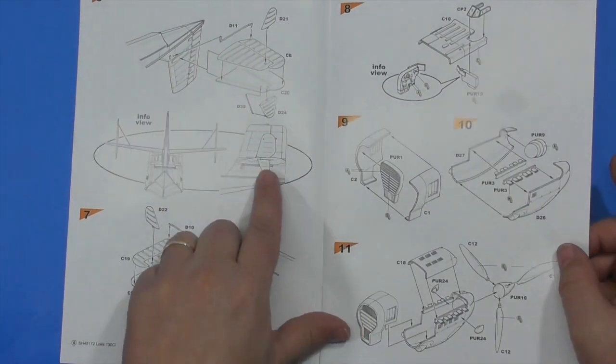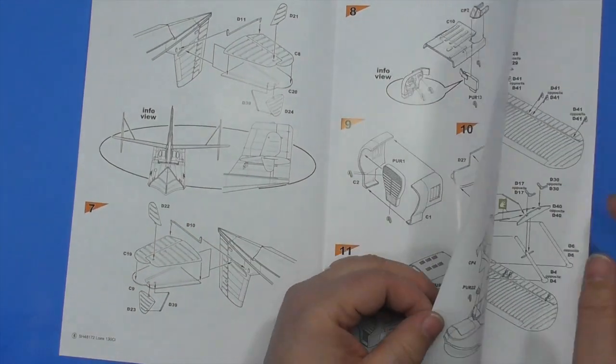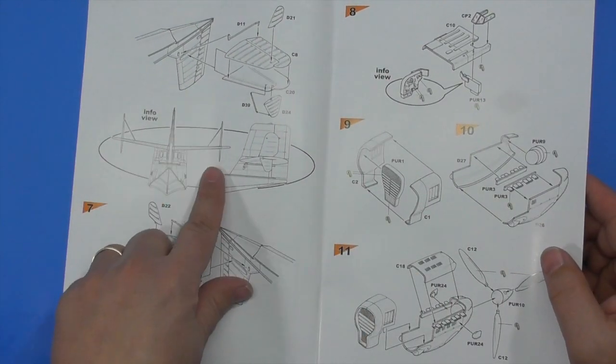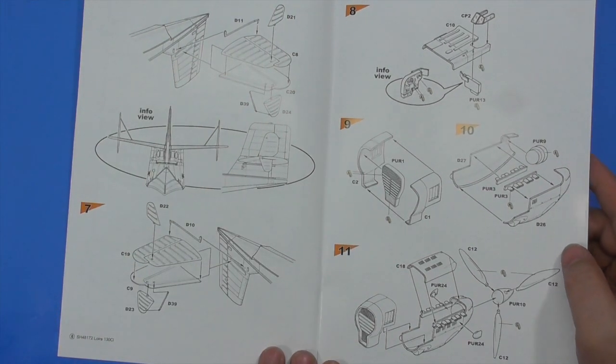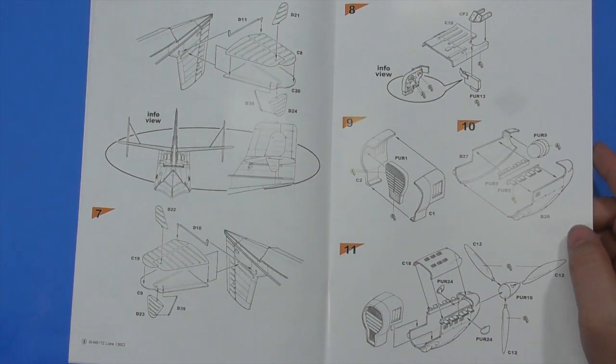Here are horizontal stabilizers that actually have vertical stabilizers, small ones attached to them. There you go. Another info view they call it. So knock it as you will, the directions are very good.